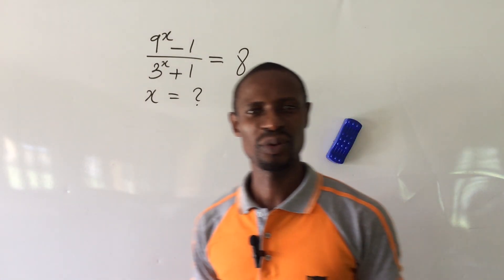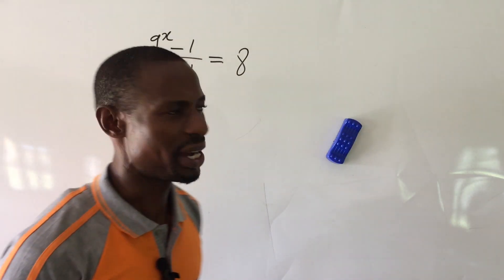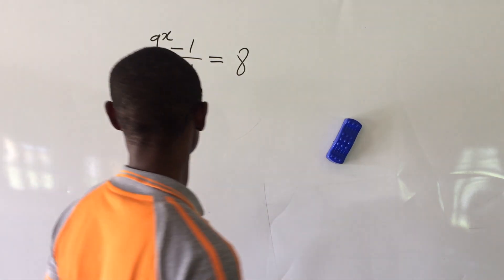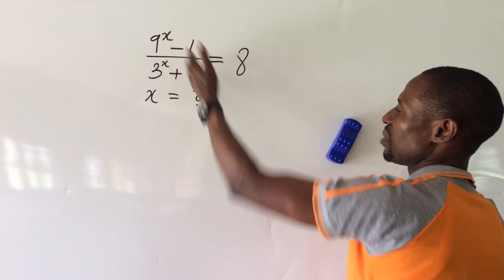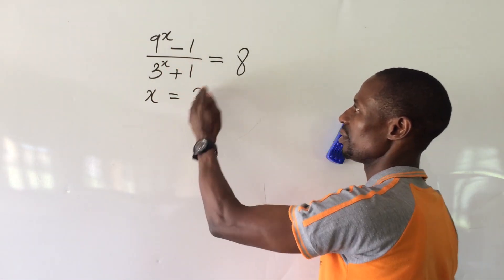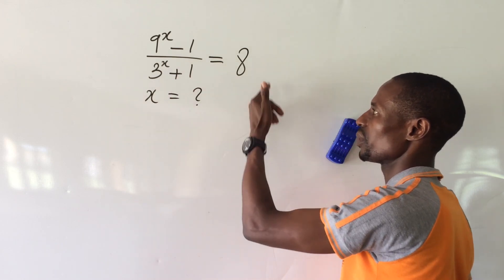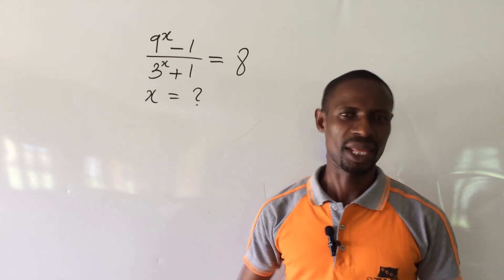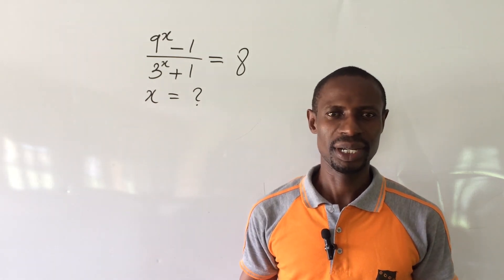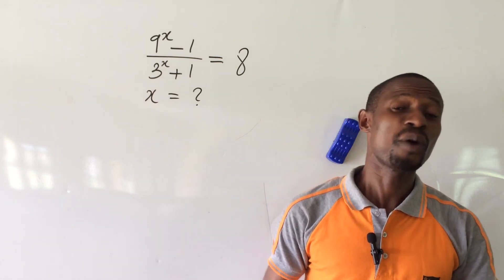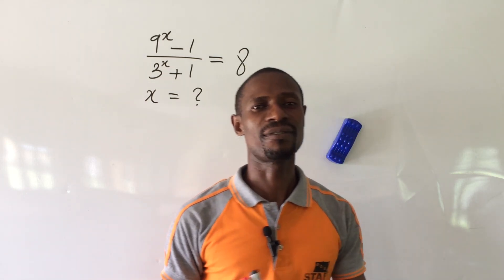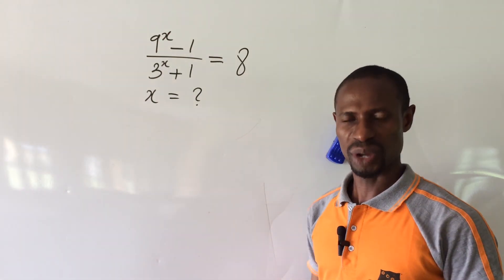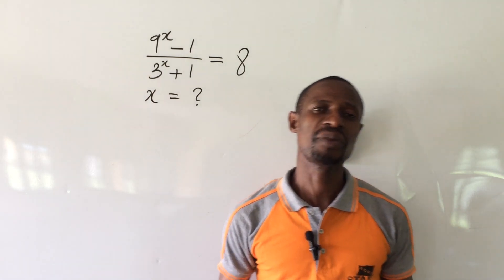Welcome everyone to my channel. Here we have an 'only paired' mathematical challenge. The question is: 9 to the power of x minus 1, all over 3 to the power of x plus 1, equal to 8. What will be the possible value of x? x could be a real number or an imaginary number, but whichever form x takes, let's go ahead and solve.